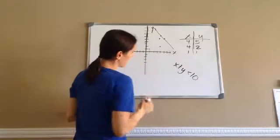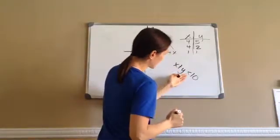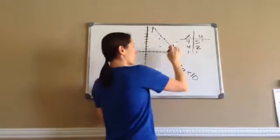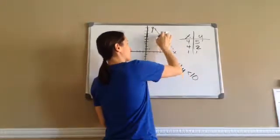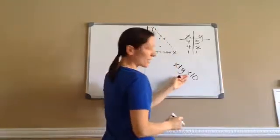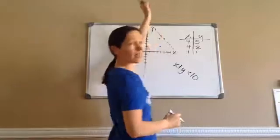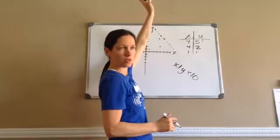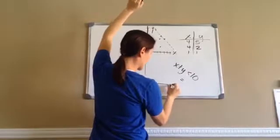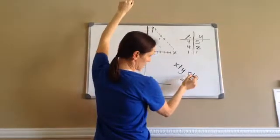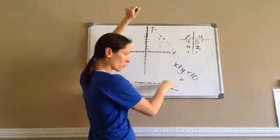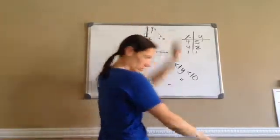So when you graph this, x plus y is less than 10. Do you remember how when you draw lines, if it's equal to, you make it a solid line. If it's not equal to, then it's a dotted line. If it's less than or greater than, it's going to be a dotted line because it doesn't equal that amount.